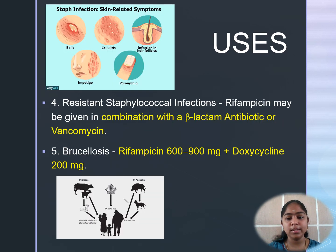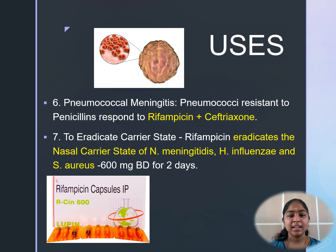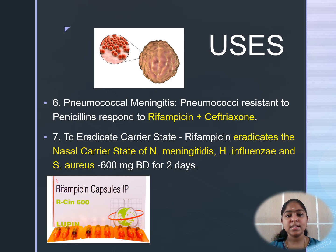In resistant staphylococcal infections, Rifampicin may be given in combination with a beta-lactam antibiotic or vancomycin. In brucellosis, Rifampicin in combination with doxycycline is given as first-line therapy. To eradicate the carrier state, Rifampicin eradicates the nasal carrier state of Neisseria meningitidis, Haemophilus influenzae, and Staphylococcus aureus; 600 mg twice daily for 2 days is prescribed.